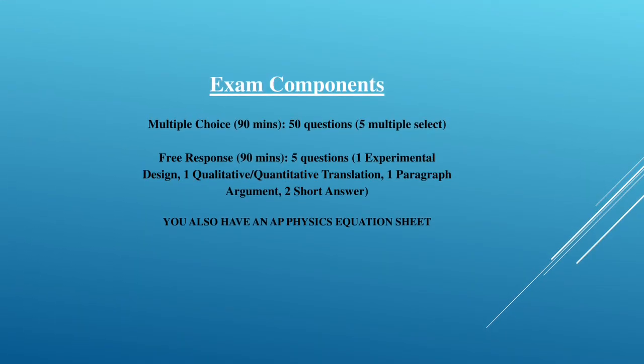So, the exam components are multiple choice. 90 minutes. 50 questions. 5 multiple select. Free response. 90 minutes also. 5 questions. 1 experimental design. 1 qualitative slash quantitative translation. 1 paragraph. 2 short answer questions. Don't forget that you also have an AP Physics equation sheet, but it does not have all the formulas.